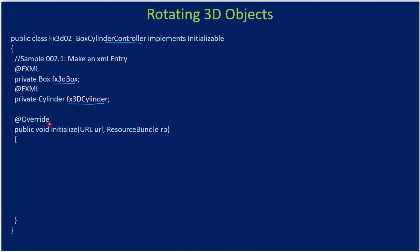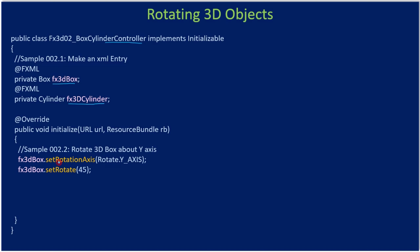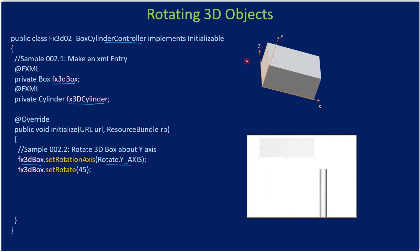Next, in the initialize method we are making a call to setRotationAxis. Here we are setting the rotation axis for our 3D box and we specify the constant Rotate.Y_AXIS. So we are going to rotate this box using the Y axis.